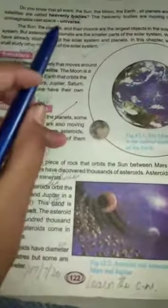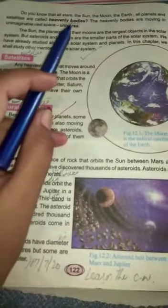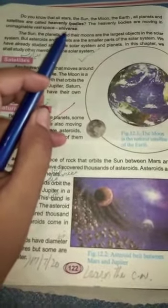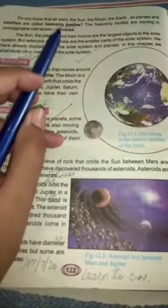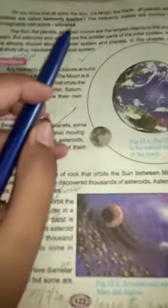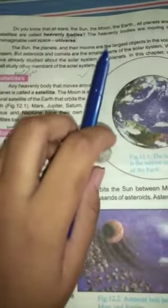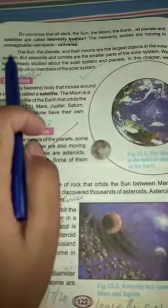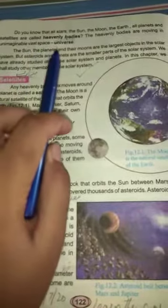Do you know that our Sun, Moon, the Earth, and all planets and stars are called heavenly bodies? We have a definition here, so you can highlight it. The heavenly bodies are moving in an unimaginable vast space called the universe.